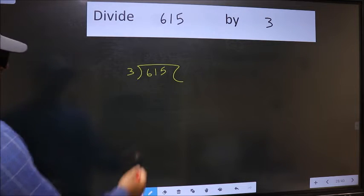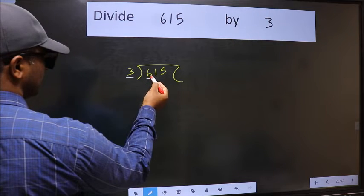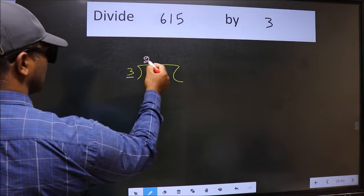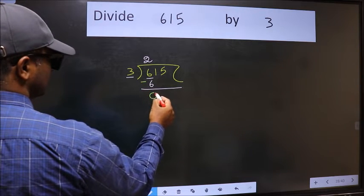Next. Here we have 6 and here 3. When do we get 6 in the 3 table? 3 times 2 is 6. Now we should subtract. We get 0.